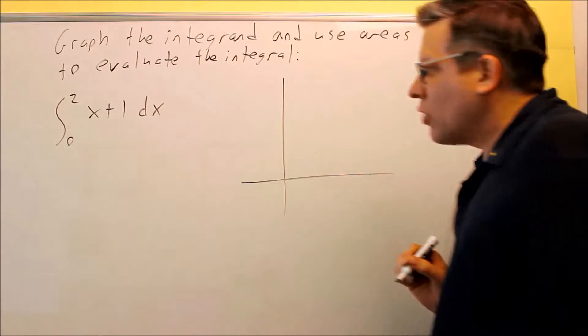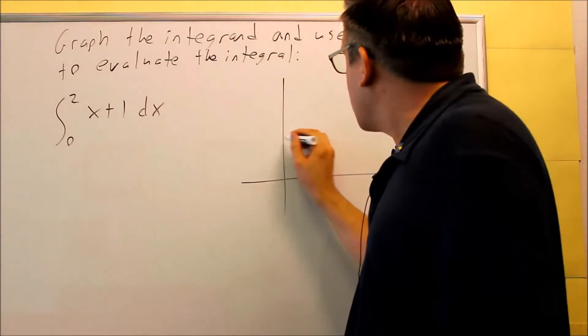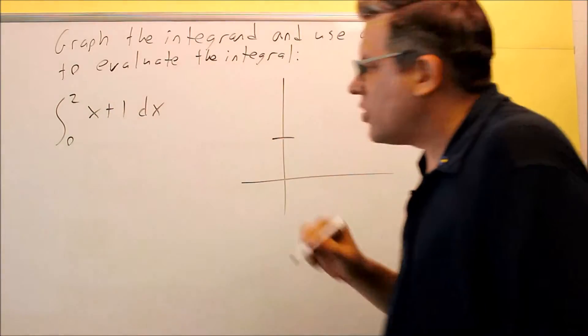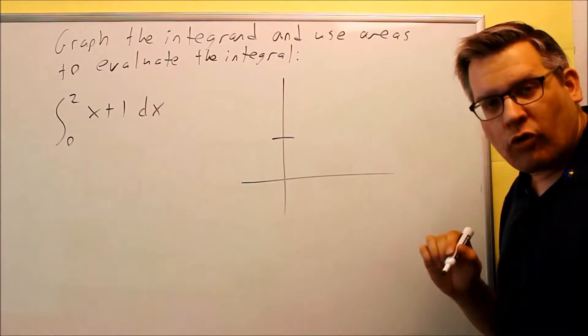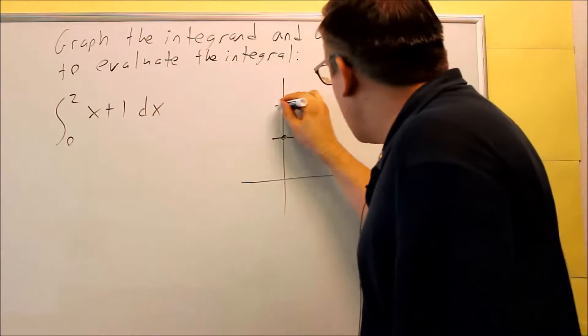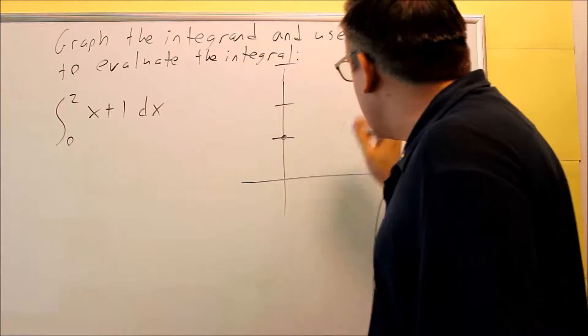So when we graph this one first, we want to start with the y-intercept, that's at 1. And then your slope, since there's no number in front of the x, that would be 1 over 1. So we'll start with this, we're going to go up 1 over 1. I tried to make this kind of bigger so you can see it.